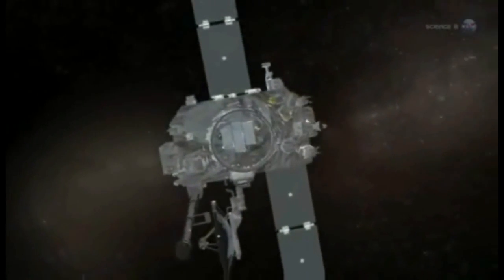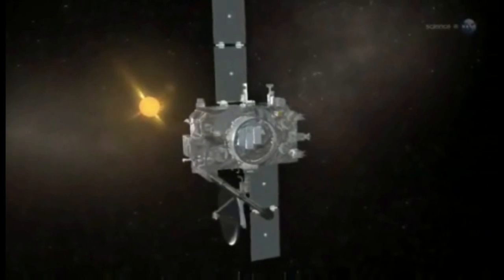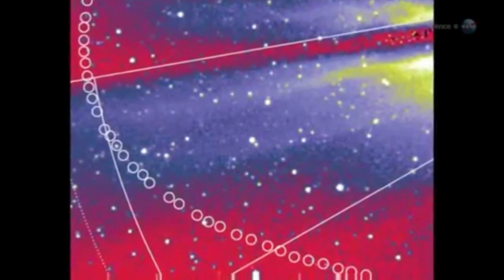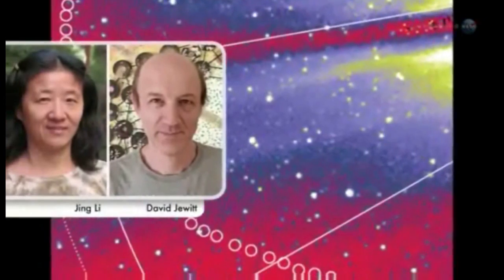Could this be the answer? To test the idea, researchers turned to NASA's twin STEREO spacecraft, which are designed to study solar activity. In June 2009, STEREO watched 3200 Phaethon passing only 15 solar diameters from the Sun's surface. What happened next surprised UCLA planetary scientists David Jewitt and Jing Li, who analyzed the data.